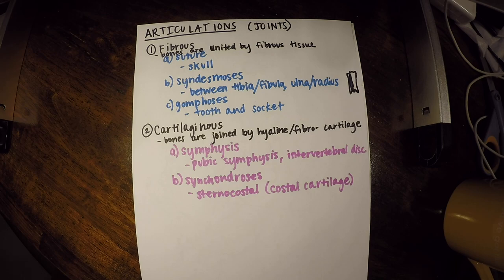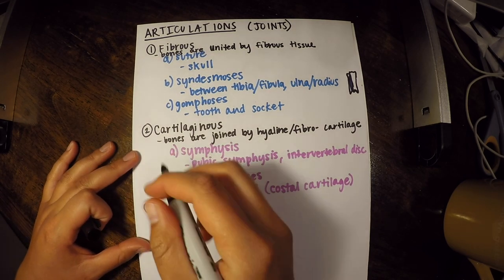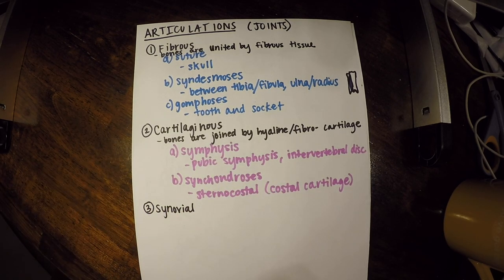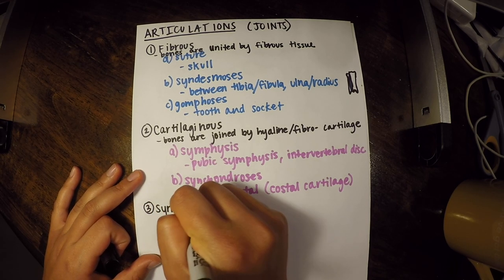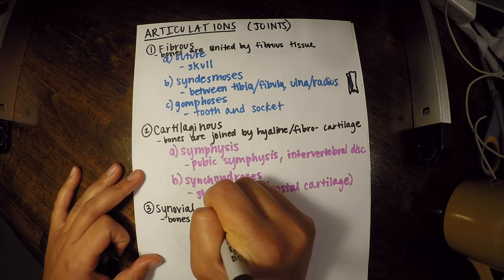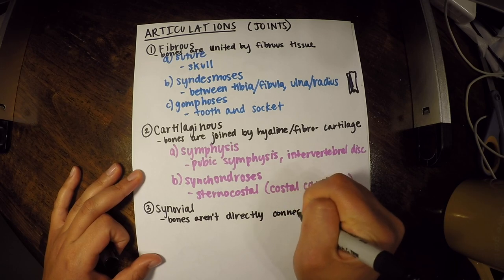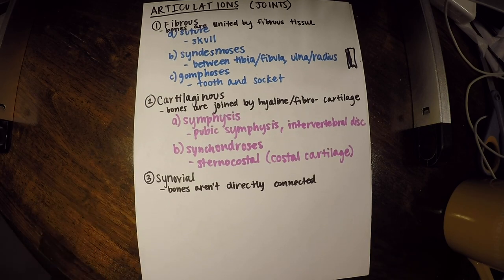That wraps up cartilaginous joints. Next, we move to our last category: synovial joints. This one is a little different — the bones aren't directly connected. What makes synovial joints unique is a number of different characteristics.